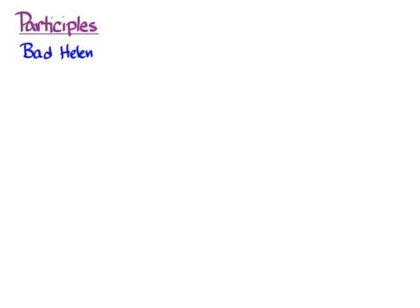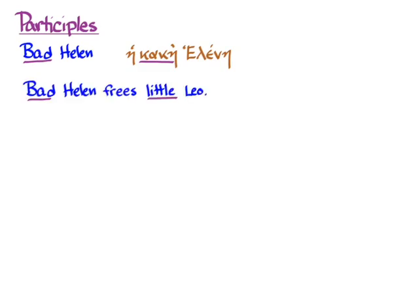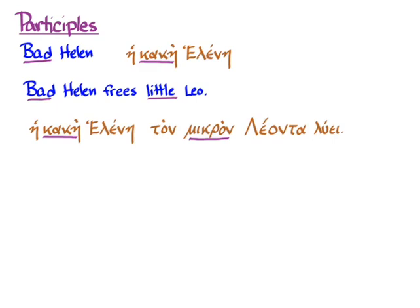Let's talk about what participles are first in English. If we have 'bad Helen,' we can express that in Greek as 'he kake Helene.' What we have here are adjectives — 'bad' and 'kake' — that describe and give information about Helen. They agree with her in case, number, and gender in Greek. Adjectives can modify nouns that are the subject of the sentence or nouns in some other part of the sentence. So 'bad Helen frees little Leo' gives us another adjective, 'little,' telling us more about Leo — in Greek: 'he kake Helene ton mikron leonta luei.' Those adjectives sit in attributive position giving us more information about those nouns.